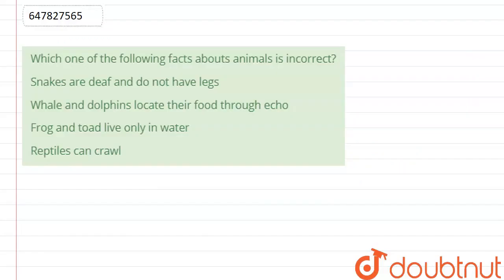Hello students, here the question is: which one of the following facts about animals is incorrect? Options are given. Snakes are deaf and do not have legs. Whales and dolphins locate their food through echo. Frogs and toads live only in water. Reptiles can crawl.